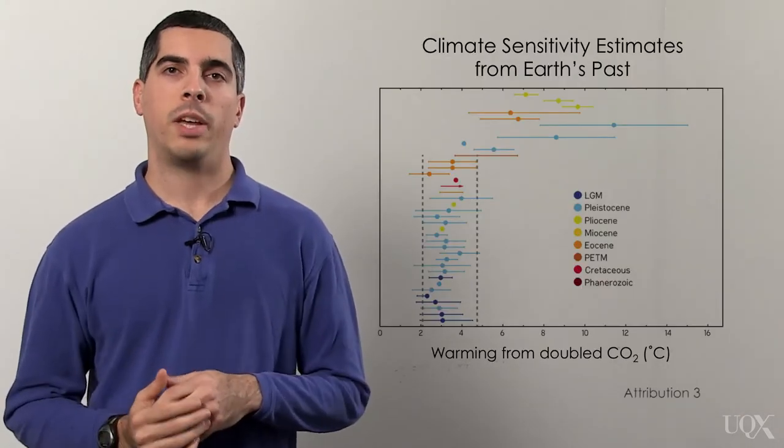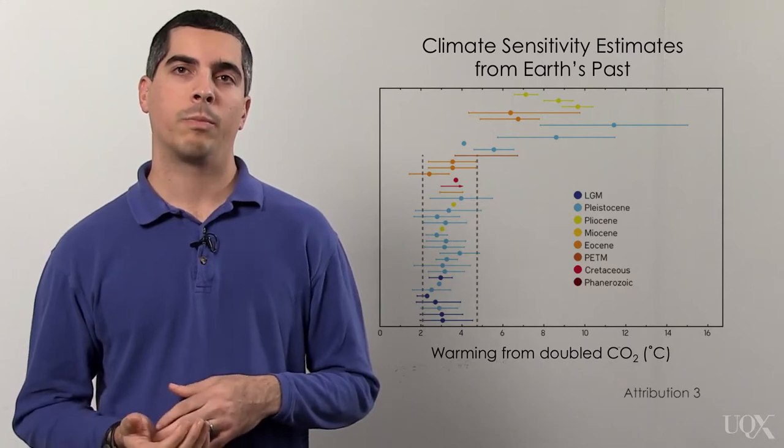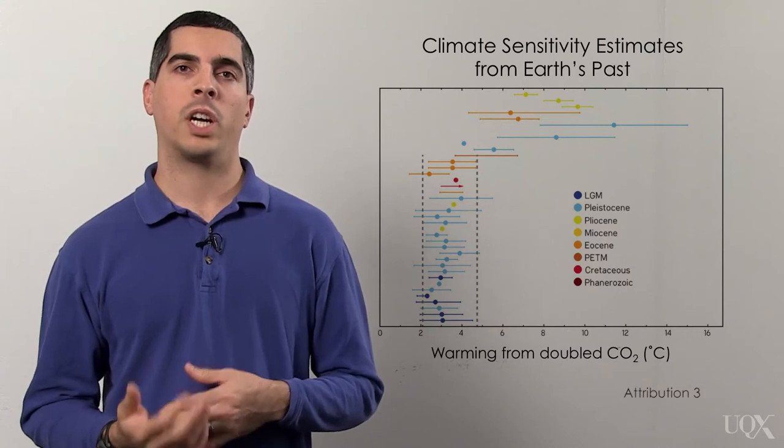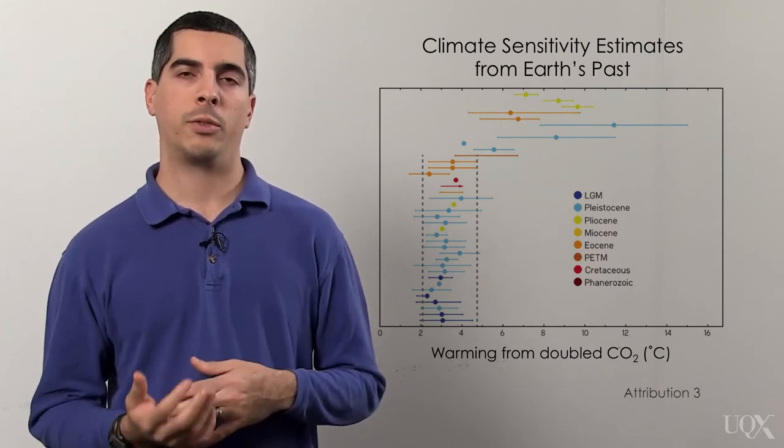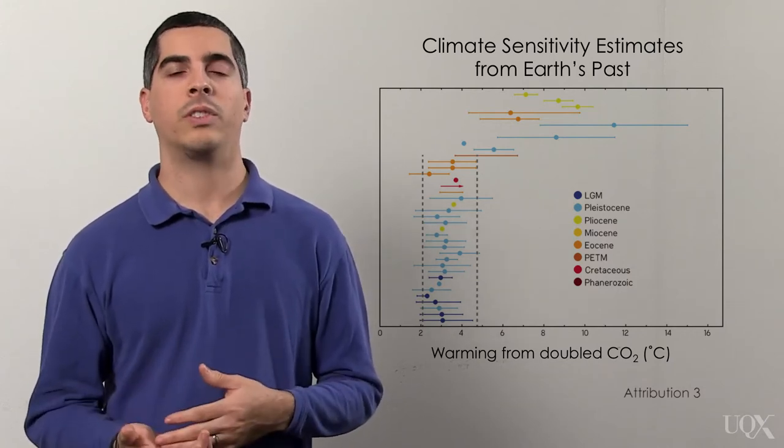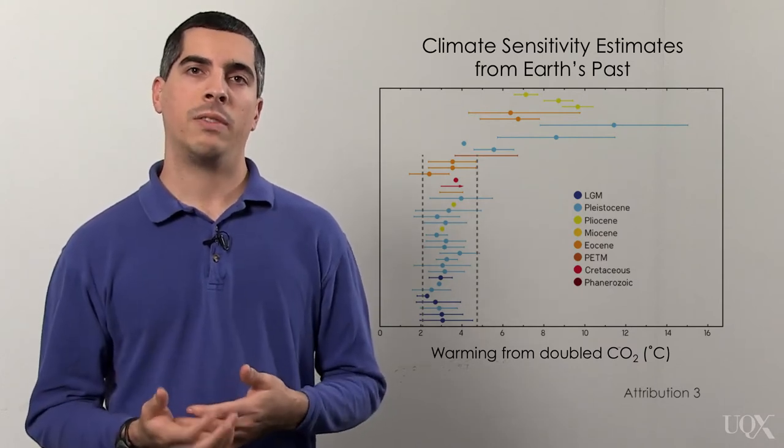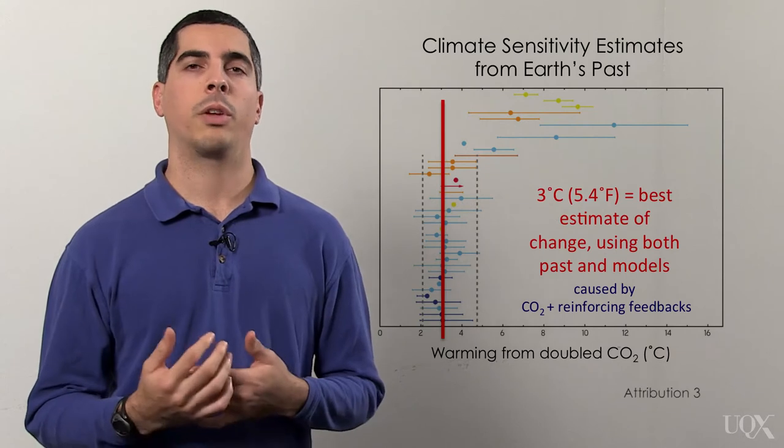All these independent methods find a fairly consistent answer. If we double the amount of carbon dioxide in the atmosphere, global temperatures will rise between 1.5 and 4.5 degrees Celsius, or between 2.7 and 8 degrees Fahrenheit. The best estimate for climate sensitivity when combining these methods is around 3 degrees Celsius.